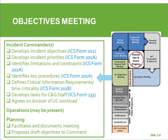Each operational period, the incident commanders use this meeting to revisit their objectives. At the very beginning of a response, this meeting should be more formal and they should go through those objectives carefully. As the response develops and everything gets a rhythm, incident commanders can do this by phone or pass objectives through email. But at the very beginning, it's helpful to have them really meet in advance and settle on their objectives for what they want to get accomplished in the next operational period. As we go through this planning cycle, we're planning for the very next operational period — really just asking what can we get done in the next 12 or 24 hours.